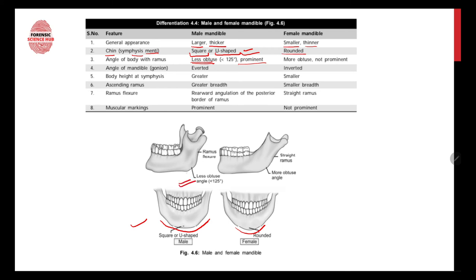The angle of the body with the ramus is less obtuse in males — more prominent — whereas it is more obtuse in females and not as prominent. Regarding the angle of the mandible, also known as the gonion, it is everted in males — meaning muscle attachments curve outward from the mandible surface — whereas it is inverted in females.